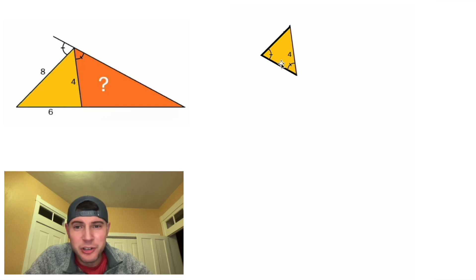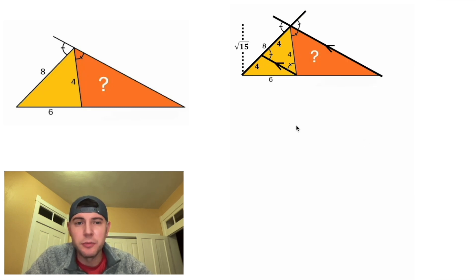We have these two base angles congruent, which means this is an isosceles triangle. So this side will also have a length of 4. And since this is 4 and the entire side length is 8, this piece will also be 4.